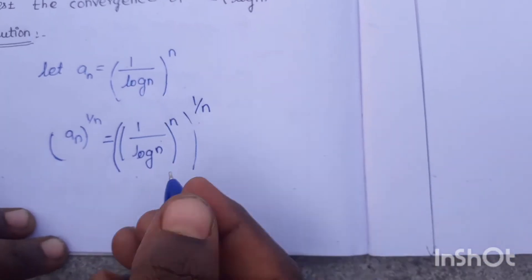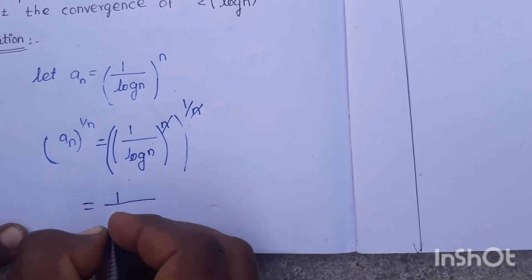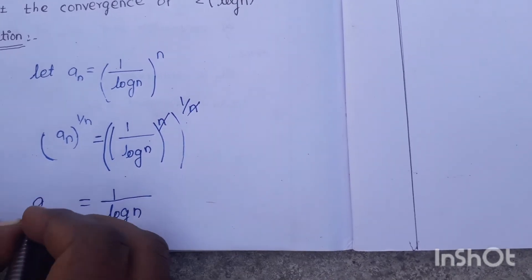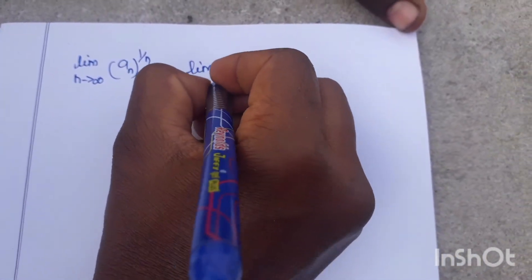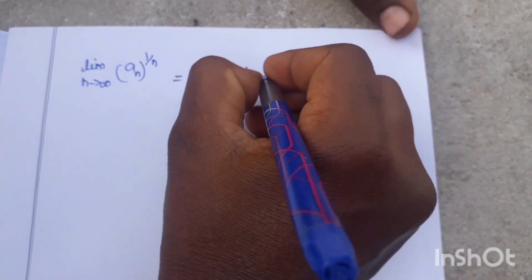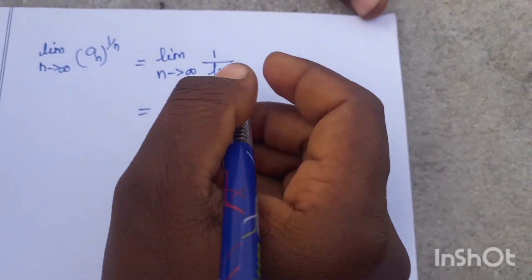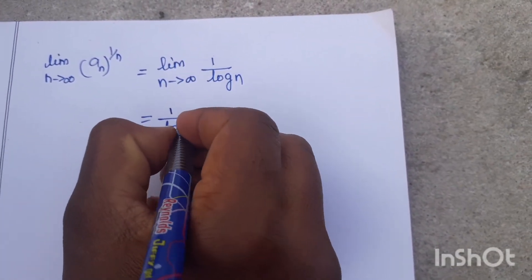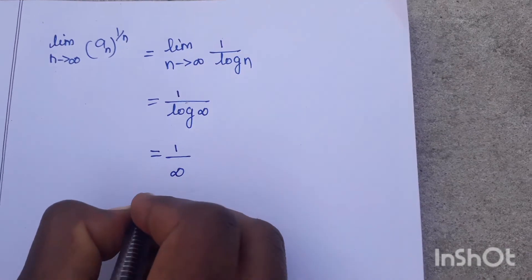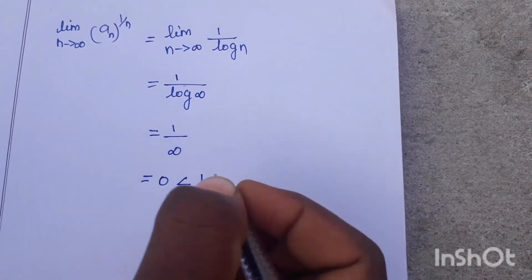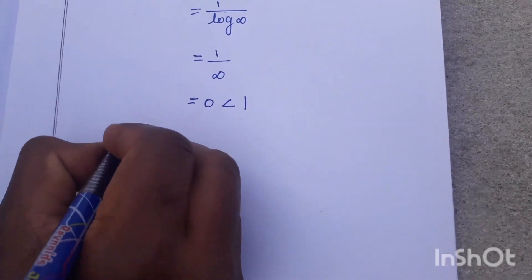So, a_n whole power 1/n equals (1/log n)^(n × 1/n) = 1/log n. Taking the limit as n tends to infinity: limit of a_n^(1/n) = 1/log(infinity). Since log(infinity) is infinity, we get 1/infinity = 0. Since 0 is less than 1, the series is convergent.